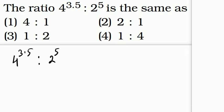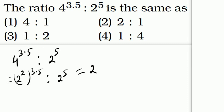4 is 2 squared, so 2 squared whole to the power 3.5 is to 2 to the power 5. That equals 2 to the power 2 × 3.5, that is 2 to the power 7 is to 2 to the power 5.